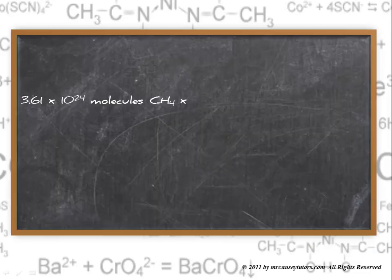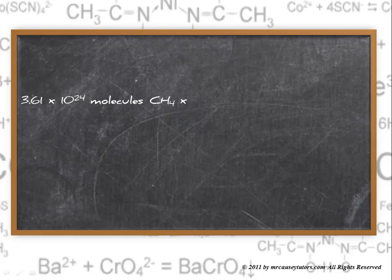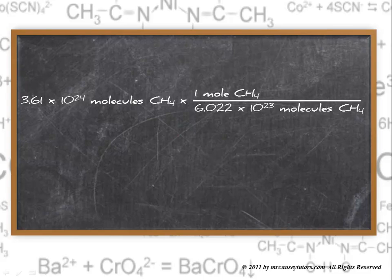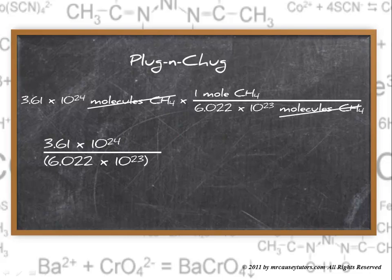To the board. 3.61 times 10 to the 24 molecules of methane and 1 mole of methane over 6.022 times 10 to 23 molecules. Let's cross out our units. You know it. Plug and chug. 5.99 moles of methane with 3 sig figs.